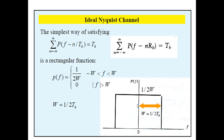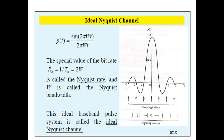The overall system bandwidth W is denoted by 1 upon 2TB, or RB divided by 2. The relation between RB and TB is RB equals 1 upon TB. So we get this equation and the frequency response of PF — this is our ideal Nyquist channel shape. Taking the inverse Fourier transform, we get PT equals sinc(2πWt) upon 2πWt, which equals sinc(2Wt).